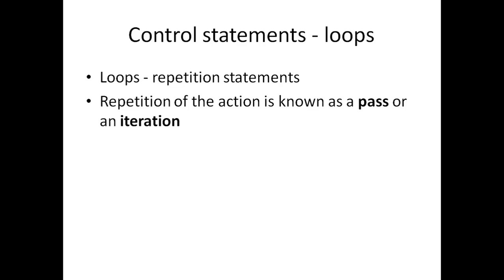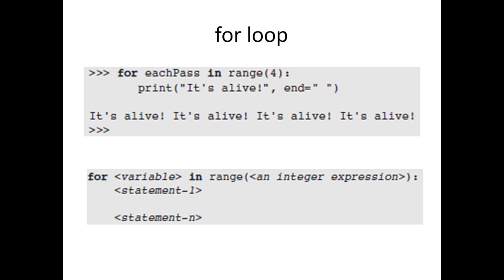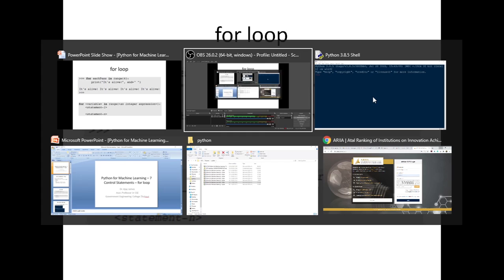Repetition of an action is called a pass or an iteration. We have two types of loops. One is definite iteration, which is defined over a number of times that we want to repeat. The second is indefinite iteration, where the program determines how many times that statement should be repeated.